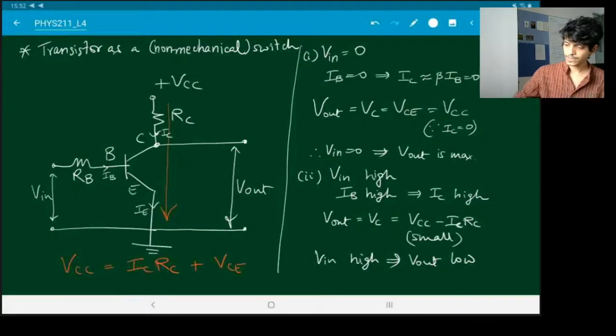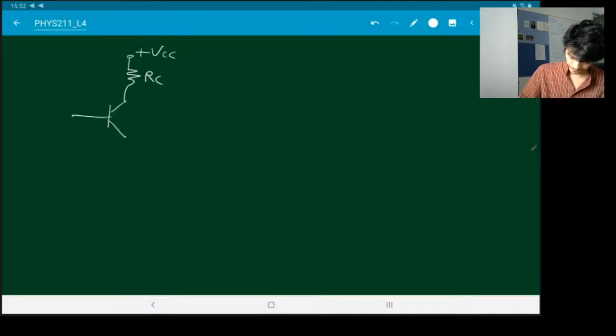By the way, so far I have always had the emitter junction always directly grounded. But in principle that need not be true. So for example, if I have a circuit that looks like this: plus Vcc, let's put the resistance for the collector, base, collector, emitter, let's put some Vbb over here, and I can also put a resistance over here at the emitter, emitter resistance.